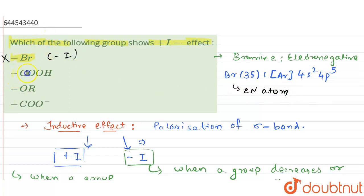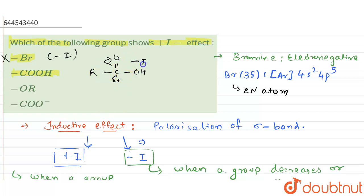The second option is the C=O group. If you write it in open form, this is C double bond O. The oxygen here is electronegative in nature, so it pulls electrons towards itself, making the carbon electron deficient. This carbon will then try to pull electrons from whichever group is substituted to it. Therefore, this group is also going to show minus I effect.